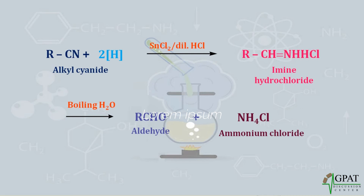One important point: the carbon number of the alkyl cyanide will be the same as in the aldehyde. For example, if the carbon number in the alkyl cyanide is three, then the carbon number in the aldehyde will also be three — the carbon number is preserved.